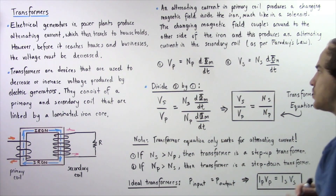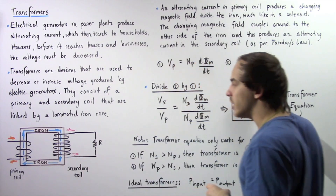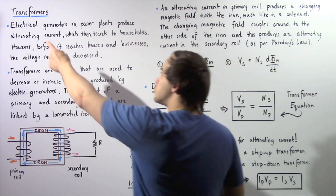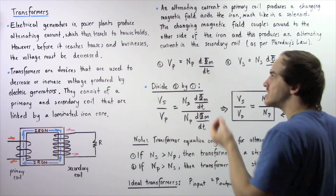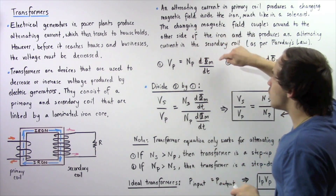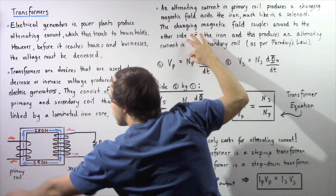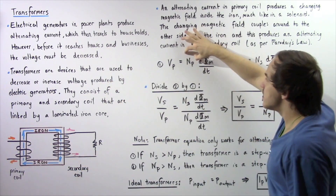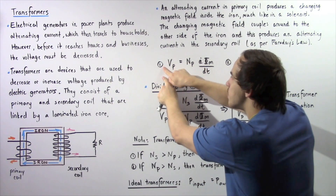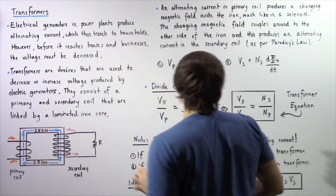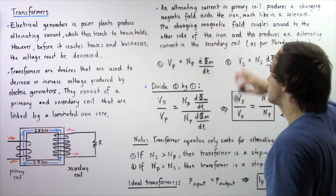Let's examine two equations. Equation one describes the primary coil, while equation two describes the secondary coil. Recall from our discussion on electric generators, we derived that the induced EMF is equal to the number of loops multiplied by the rate of change of magnetic flux. For the primary coil with NP loops, this gives us the primary voltage VP, which equals NP multiplied by the rate of change of magnetic flux with respect to time.